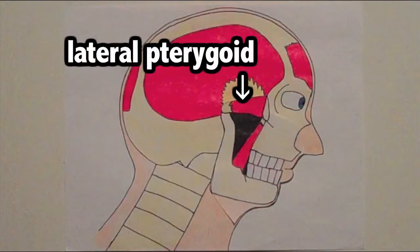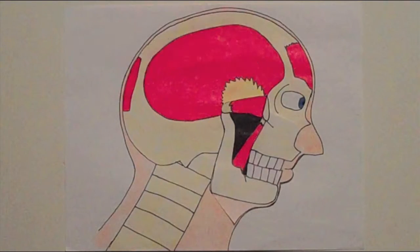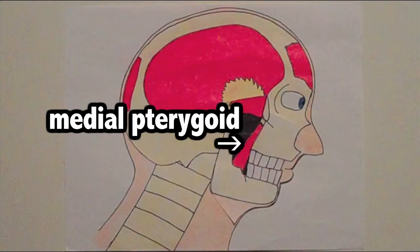The lateral pterygoid is located behind the masseter and helps with the opening of the mouth. The medial pterygoid helps you close your mouth.